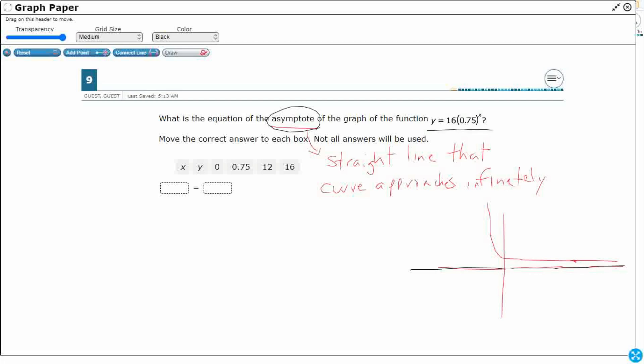We know it's an exponential function here because it's in that form y equals a times b to the x. And when your x or your independent variable is in that exponent location right there, that is going to usually produce something that looks like this with an asymptote.